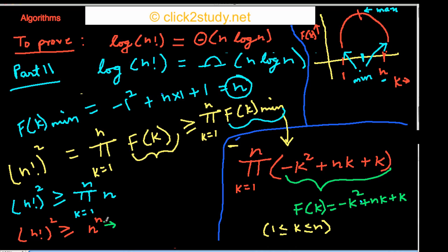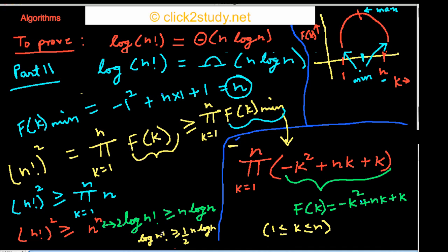The constant here is 1/2, and this proves the Ω part: log(n!) is in Ω(n log n), since log(n!) is greater than or equal to a constant times n log n for sufficiently large n. So we have proven Part 1 (the O part) and Part 2 (the Ω part), which together prove that log(n!) is in Θ(n log n). That's the complete proof.